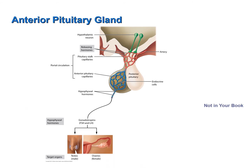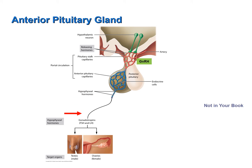In the hypothalamus, cells secrete a hormone called gonadotropin releasing hormone. That hormone is carried to the anterior pituitary gland, where it causes the secretion of the gonadotropins: follicle stimulating hormone and luteinizing hormone. Those hormones enter the systemic circulation and are taken to the gonads, where they bind specific target cells.